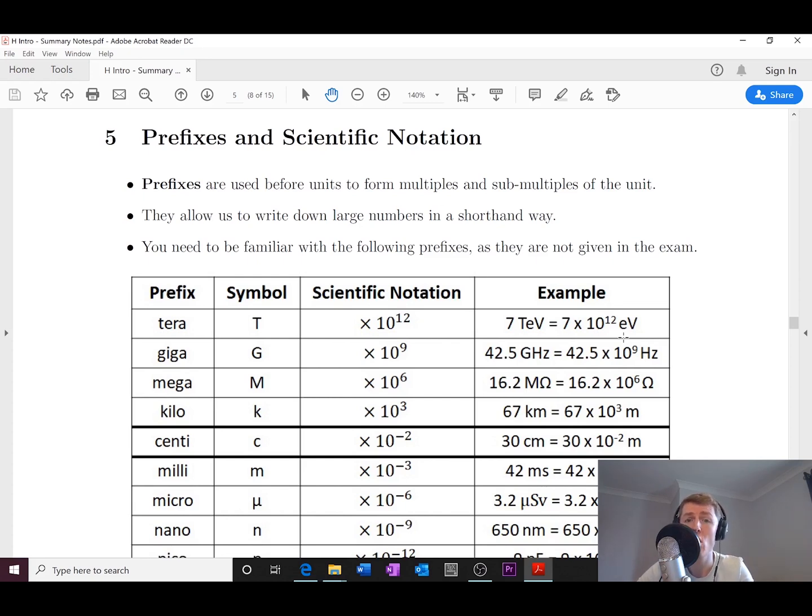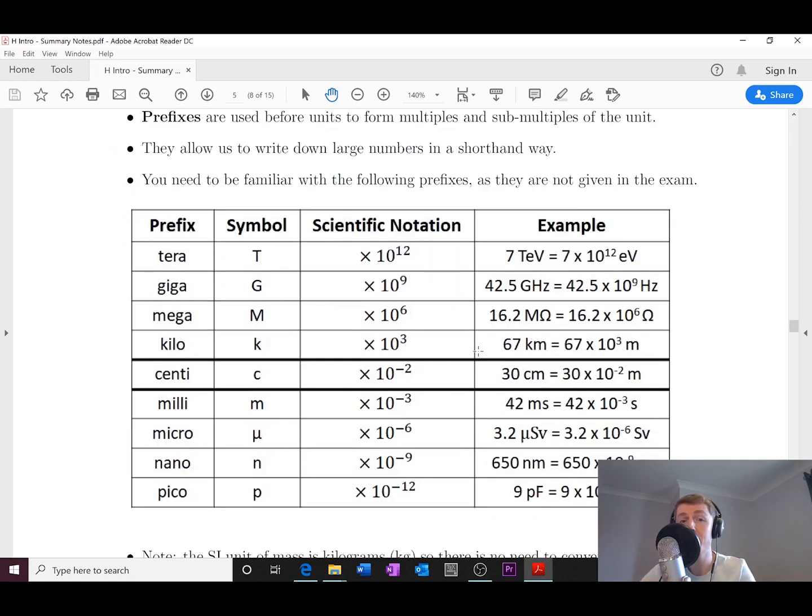So what you need to be able to do is change prefixes that you see before units into numbers. So the way we do that is we use scientific notation. The only difference between this table and the National Five one is that there's been two more prefixes added, one at either end of the table.